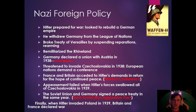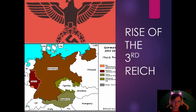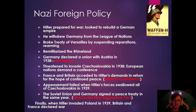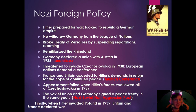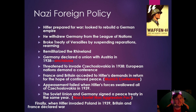Hitler threatened to invade Czechoslovakia and take the Sudetenland — the light green area in Czechoslovakia — which had a lot of farmland and a sizable German minority, but definitely not a majority. France and Britain called a meeting in Munich, known as the Munich Conference, and told Hitler he could have that area. Czechoslovakia was left holding the bag, unable to do anything. This is known as appeasement.